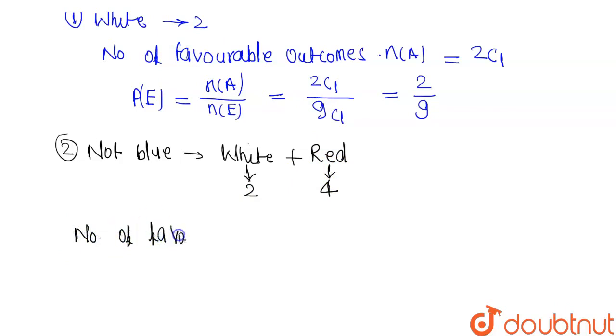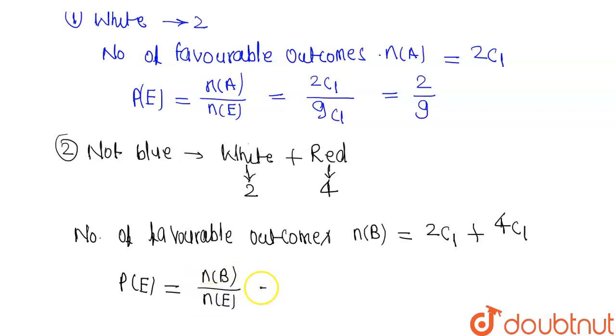Number of favorable outcomes n(B) equals 2c1 plus 4c1. The probability P(E) equals n(B) divided by n(E), which gives us 2c1 plus 4c1 over 9c1.